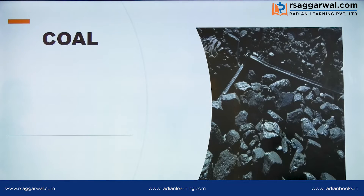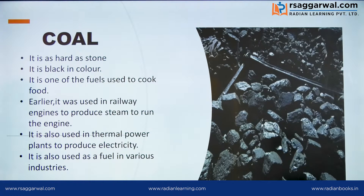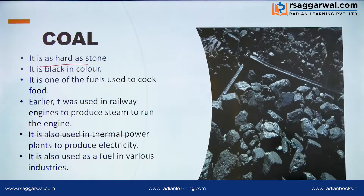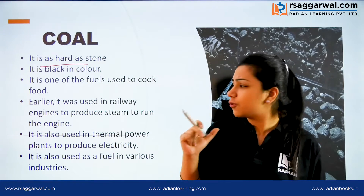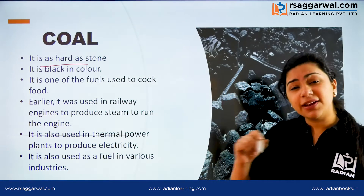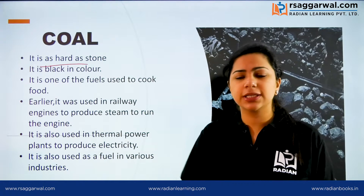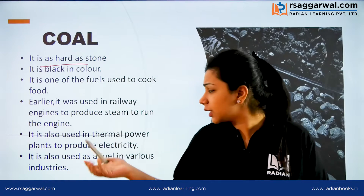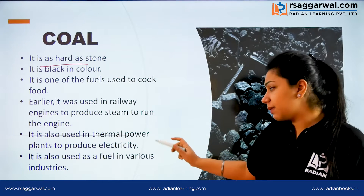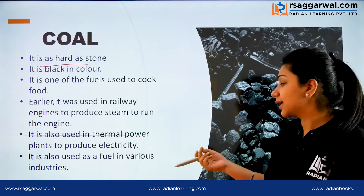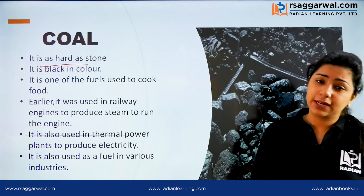Let's read the entire story of coal. What is coal and what is it used for? Coal is hard and black in color. It is used to cook food — you have seen it used in tandoors. It is also used in railway engines to produce thermal energy. It is used in thermal power plants to produce electrical energy, and it is used in various industries.